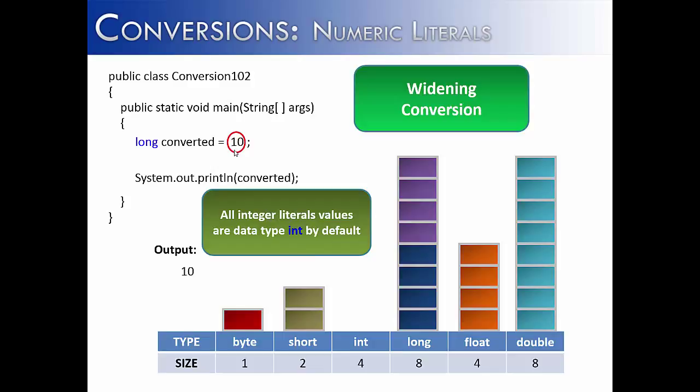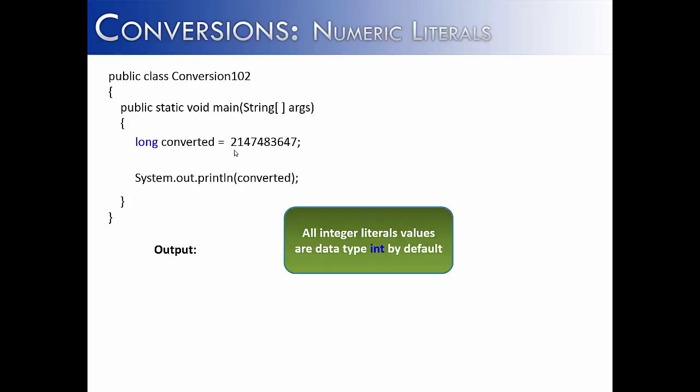So what I've done is I've taken the highest value that an integer can hold. And that is around 2.1 billion. And I've stored it as a long. And as I said earlier, all integer literal values are data type int by default. So therefore, there shouldn't be a problem running this. And there's not. It would print the highest value possible.